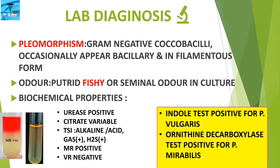Biochemical properties: Proteus are urease positive, citrate variable, and in triple sugar iron (TSI) we get alkaline over acid with gas and H2S. They are MR positive and VP (Voges-Proskauer) negative. These features are common for both Proteus mirabilis and vulgaris, but the indole test is positive for Proteus vulgaris and negative for Proteus mirabilis. Ornithine decarboxylase test is positive for Proteus mirabilis but negative for Proteus vulgaris.